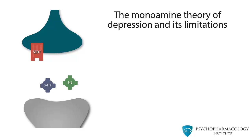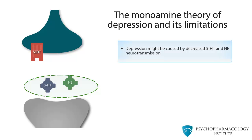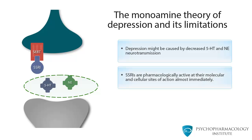What does the monoamine theory of depression hold? This theory postulates that depression might be caused by a decrease in serotonergic and noradrenergic neurotransmission. SSRIs are pharmacologically active at their molecular and cellular sites of action almost immediately. If the reuptake of serotonin or norepinephrine is blocked, this causes an increase in neurotransmitter availability at the synaptic cleft. However, here comes the fact that poses a big limitation for the monoamine theory of depression.